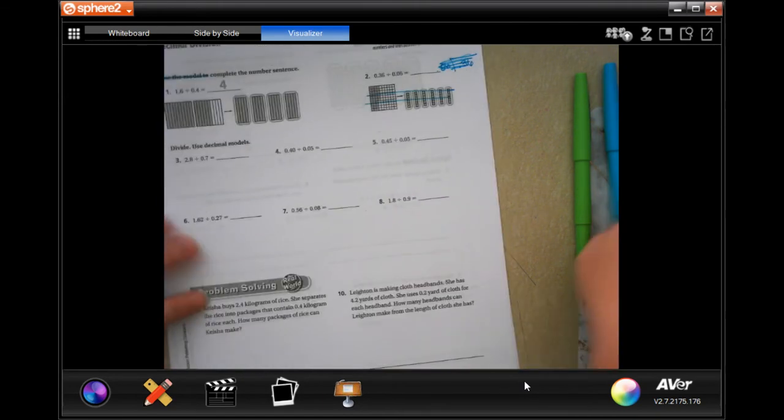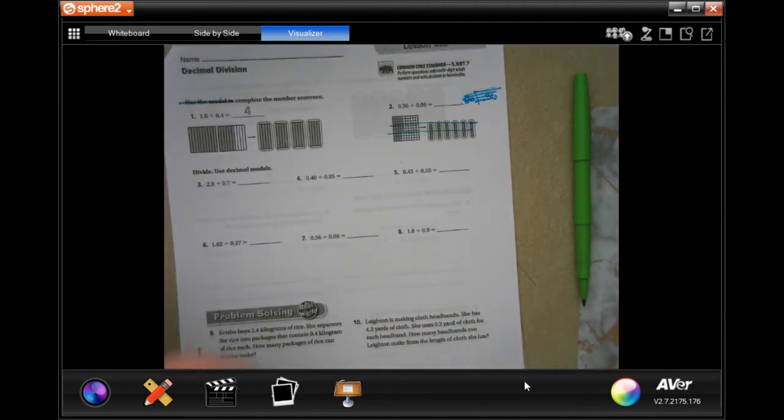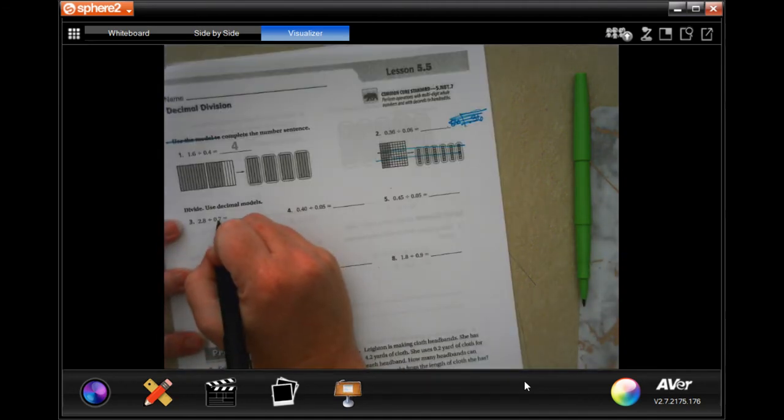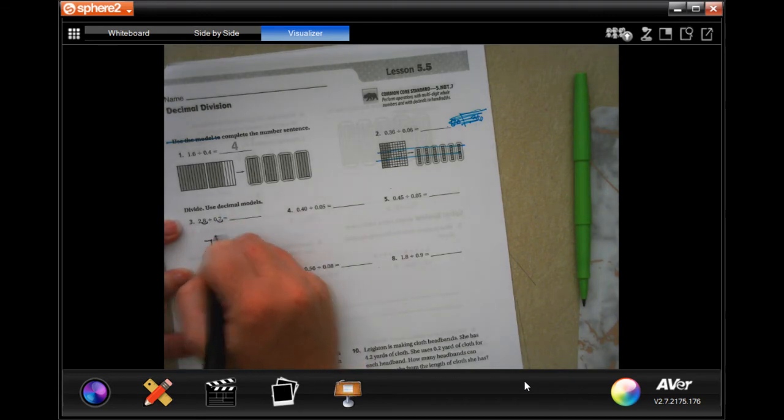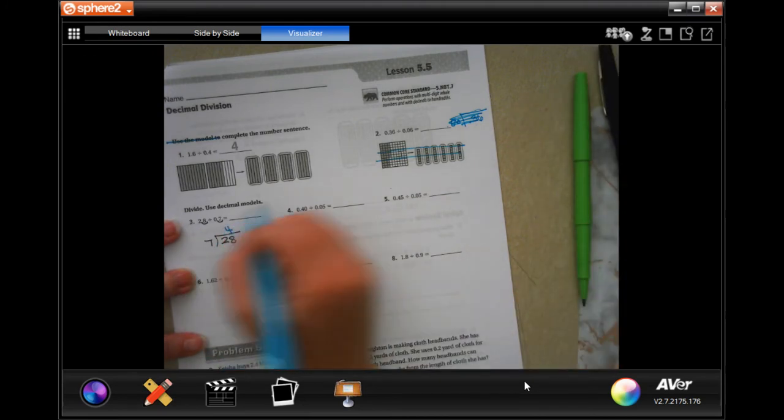We'll do number three together. 0.7, I'm going to have to move that one time, so I'm going to have to move this one one time. So now it's going to be 7 into 28. Well, 7 goes into 28 four times. There you go.